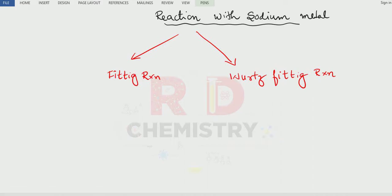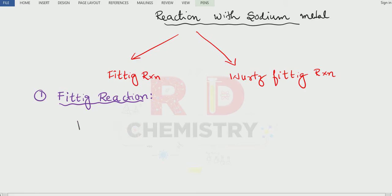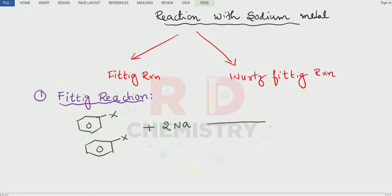Let us see the first one — the Fittig reaction. In the Fittig reaction, the haloarene benzene ring is attached to the halogen. So I will take two moles of the haloarene — benzene ring attached to the halogen — reacting with two moles of sodium metal in the presence of dry ether. Dry ether is the solvent, and it should be dry; otherwise sodium metal can react with the moisture present in the solvent.